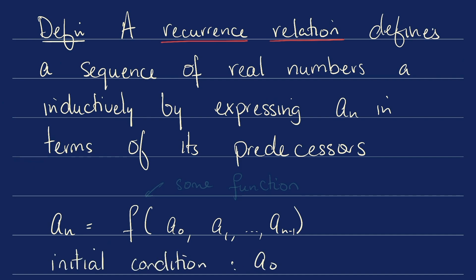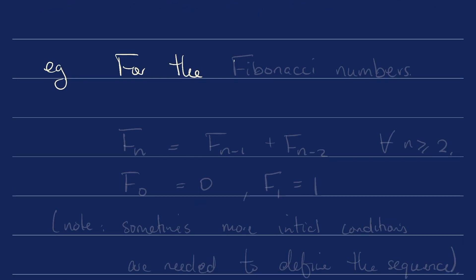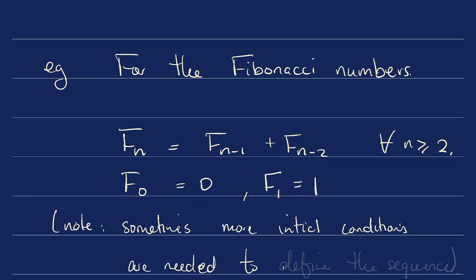with initial condition a0. That's what kicks off the sequence. Here, F is going to be some function. For example, for the Fibonacci numbers, F_n is going to be the sum of the two preceding terms and the initial condition F_0 is 0 and F_1 is going to be 1. So here we'll note that sometimes more initial conditions are needed to define the sequence.